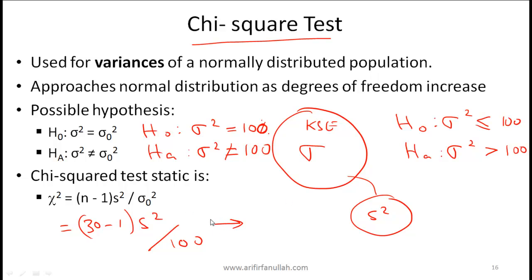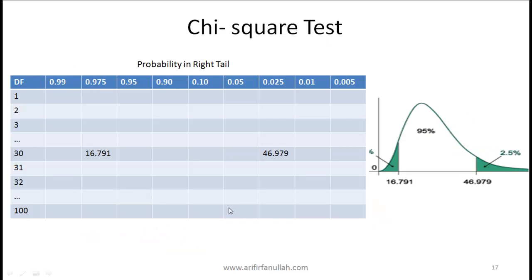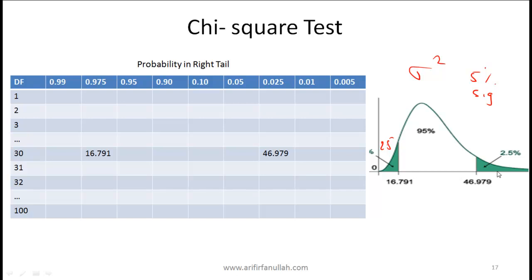You compare the chi-squared test statistic against critical values read from the chi-squared table. The chi-squared distribution is bounded by zero on the left (since variances cannot be negative) and is right-skewed. At a 5% significance level, 95% of the area lies in the middle, with 2.5% in each tail.